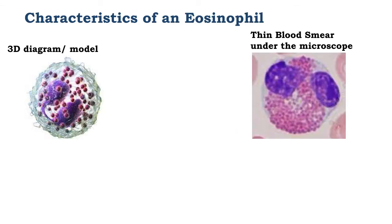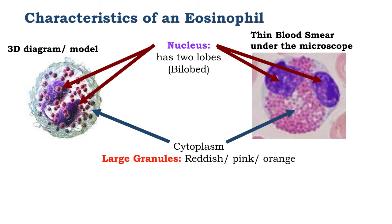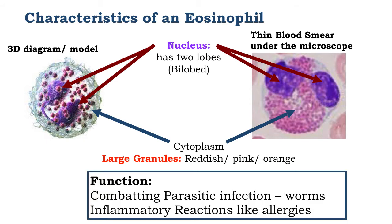Let's look at the characteristics of an eosinophil. The diagram on the right is a three-dimensional model of an eosinophil; the one on the left is a blood smear seen under the microscope. The nucleus of the eosinophil is bilobbed. The cytoplasm has large granules that are reddish, pink, or orange. The function of the eosinophil is to combat parasitic worms, and it also comes into play during inflammatory reactions like allergies.